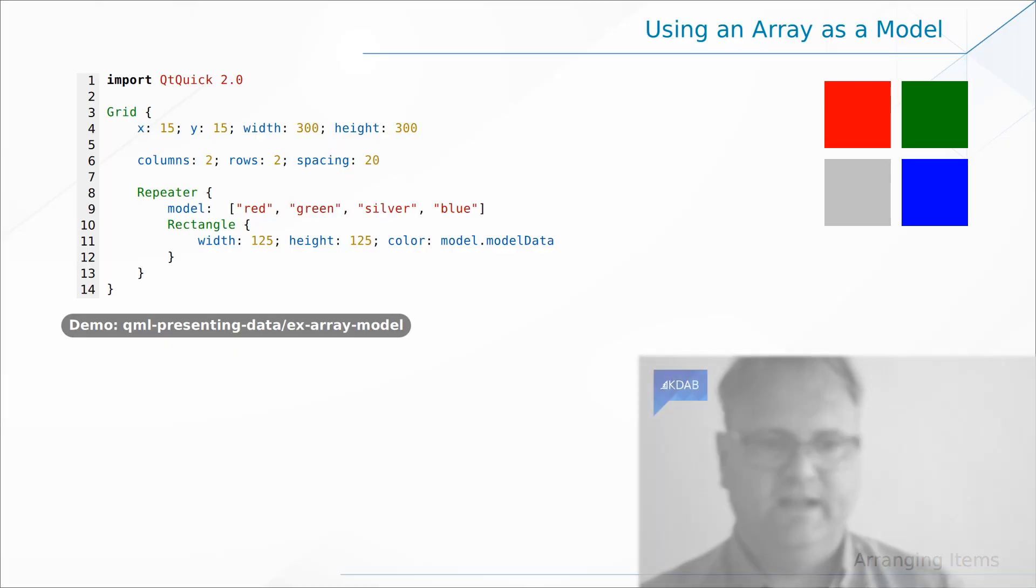I'll show you yet another way of using a repeater. I'll show you another way to specify the model. This time, my model is just a simple javascript array. Red, green, silver, blue. That's my array here. And now, I can access the element of my model using model.model.data. So, my color will either be red, green, silver, blue, depending on which element I'm instantiating.